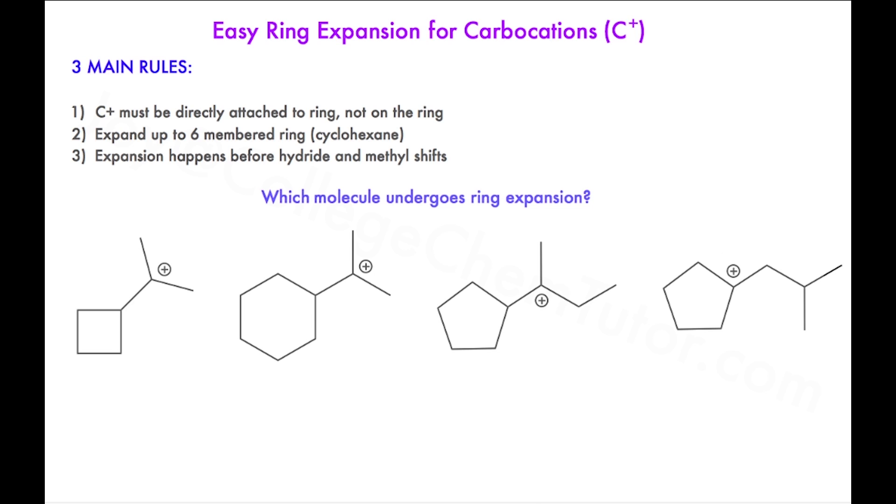Let's start from the left at the cyclobutane. The carbocation atom, which is highlighted in pink, is directly attached to the ring represented by the maroon carbons. This molecule is eligible for ring expansion from four to five.